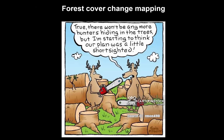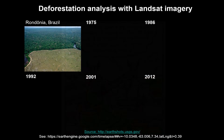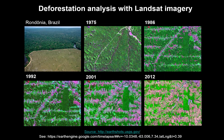Changes in forest cover impact the global carbon cycle, the hydrologic cycle, biodiversity, and are also critical to understanding the causes and consequences of land use changes. This slide provides an example of a deforestation analysis in Brazil using a time series of Landsat imagery.